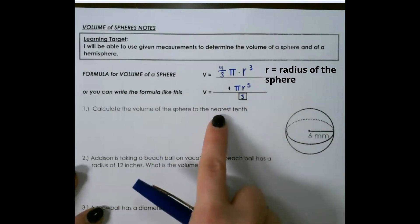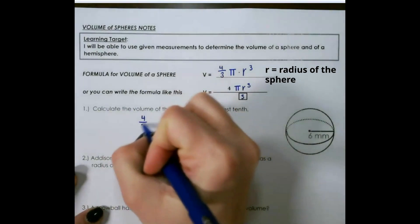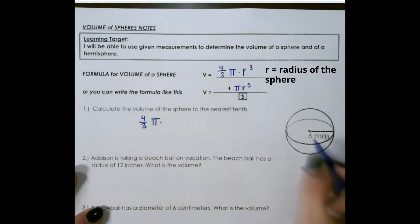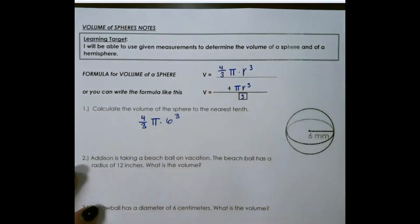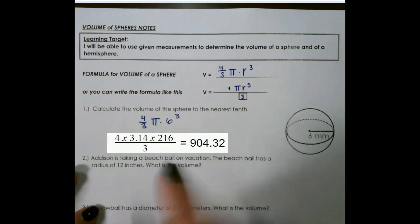Let's look at our first example. We would use four-thirds pi times r, which is six, cubed. Then you can just plug this into your calculator.